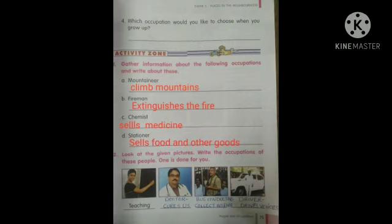Next exercise, page number 75. Gather information about the following occupations and write about these. You can see the fourth thing that you have to do by own. That I have told you. Okay, then we can listen the exercise.